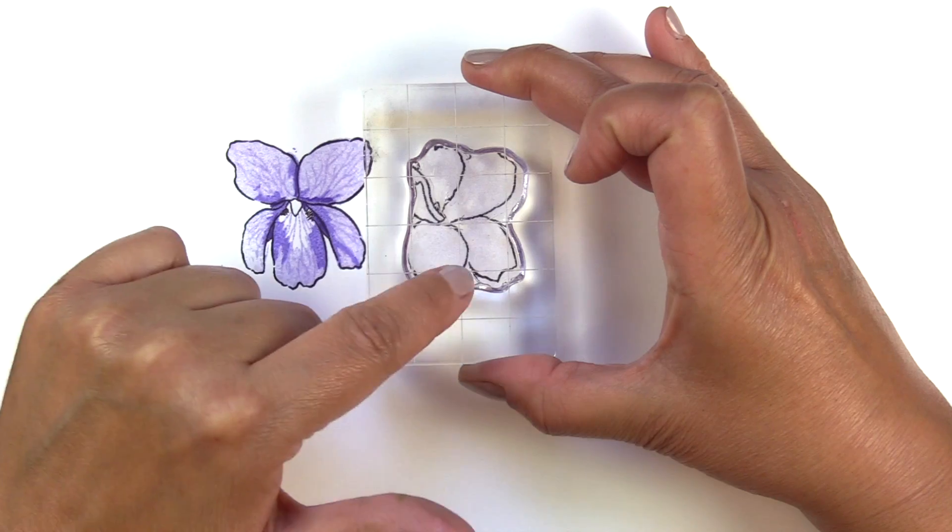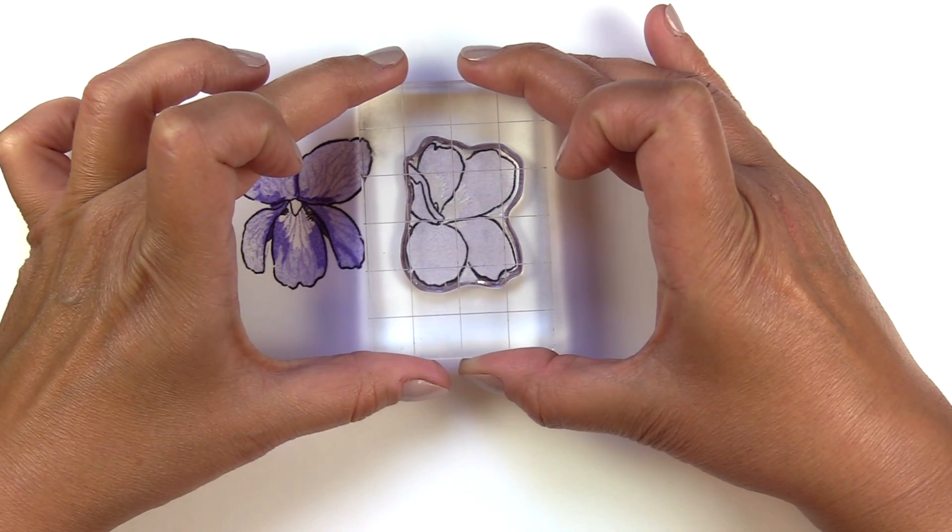Again, the first solid layer is very easy to line up with the edges. Stamped in Wisteria.